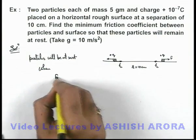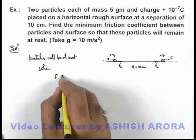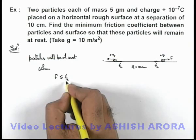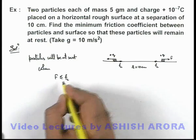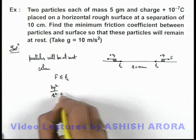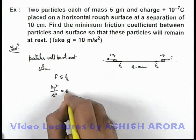The Coulombian force is less than or equal to limiting friction. So here for analysis we can use the limiting value equality. So here Coulombian force is k q squared by r squared, which should be equal to the limiting friction, which is mu m g.